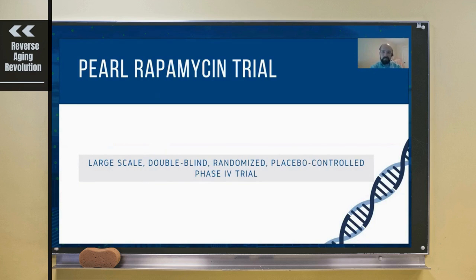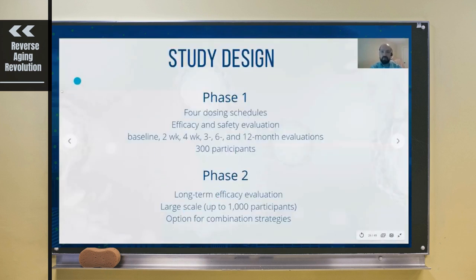It's going to be one of, if not actually the largest so far, human aging trial on rapamycin, and it's groundbreaking in many ways. We're going to be doing it in multiple phases. So far we've developed the plan for Phase 1 and Phase 2.